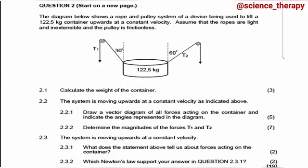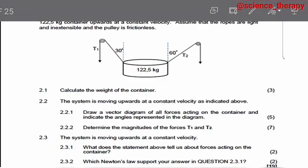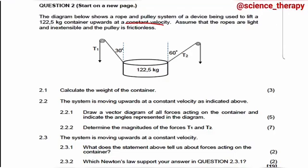Here we have the diagram below shows a rope and a pulley system of a device being used to lift a 122.5 kg container upwards at a constant velocity. So we highlight the key word there, constant velocity. Assume that the ropes are light and inextensible and the pulley is frictionless. Now 2.1 says calculate the weight of the container.